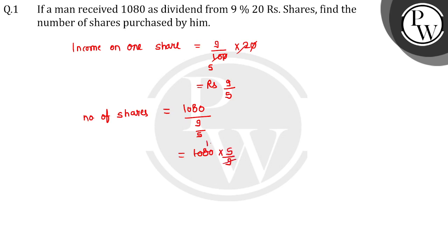Divided by 9 gives us 120 multiplied by 5, which equals 600 shares.